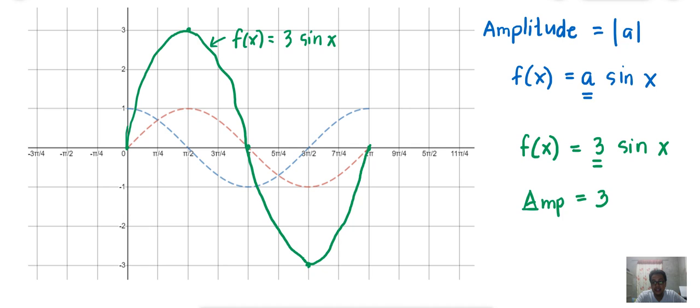So, that is the effect of the amplitude on the wave, sine, and cosine.